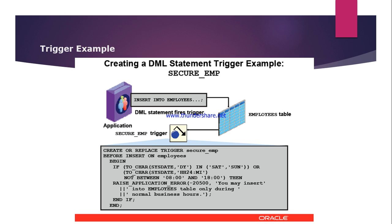There are many uses of triggers in Oracle database. The first one is automatically generating virtual column values. We can also prevent invalid transactions, and we can modify table data when a DML is issued against views — this is done using the instead of trigger. We can prevent DML operations after business hours.